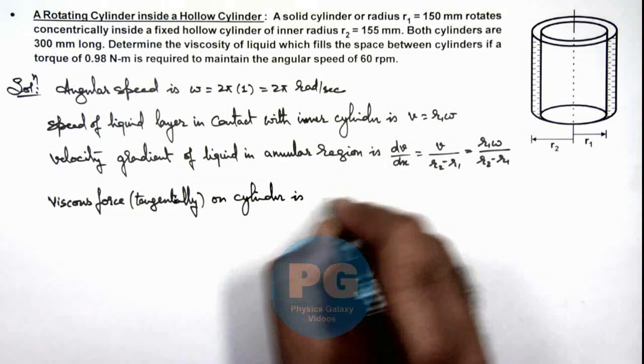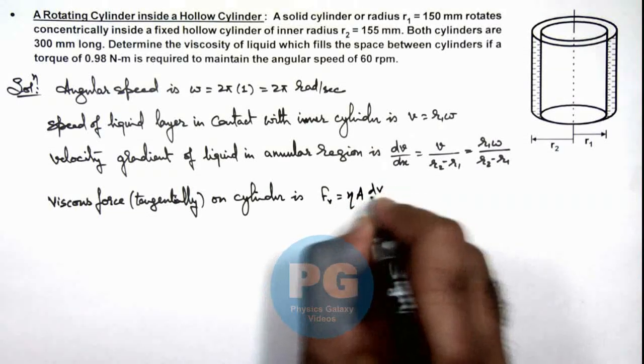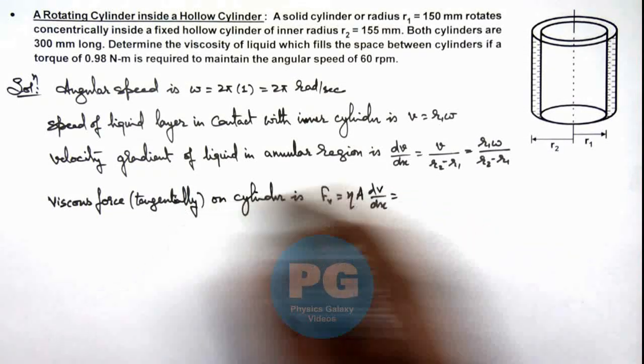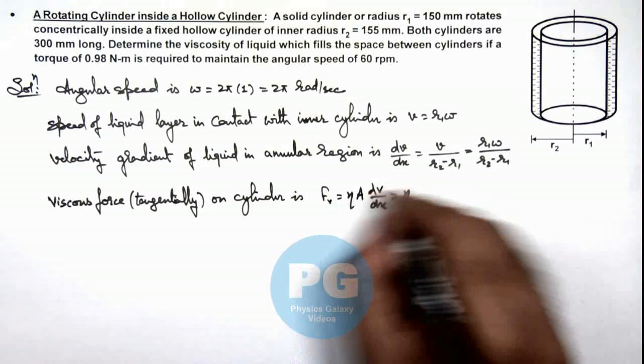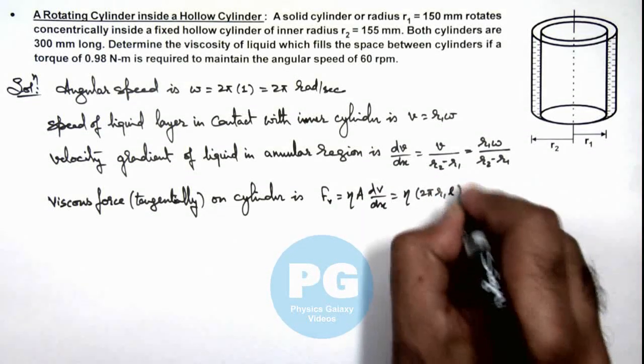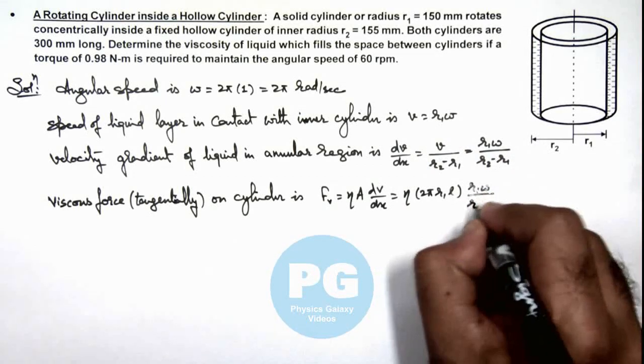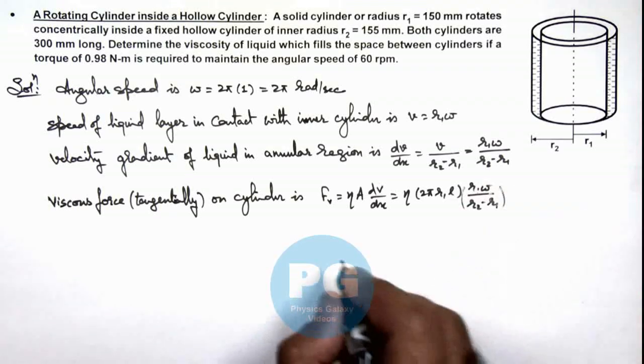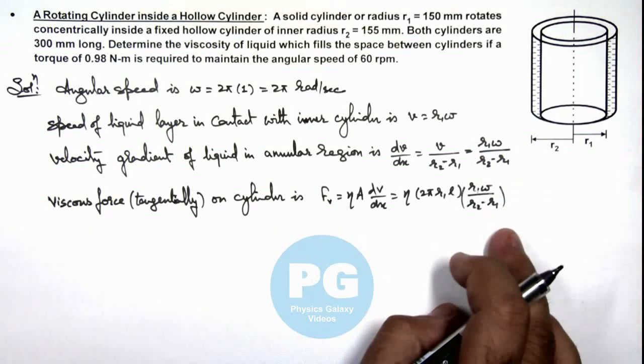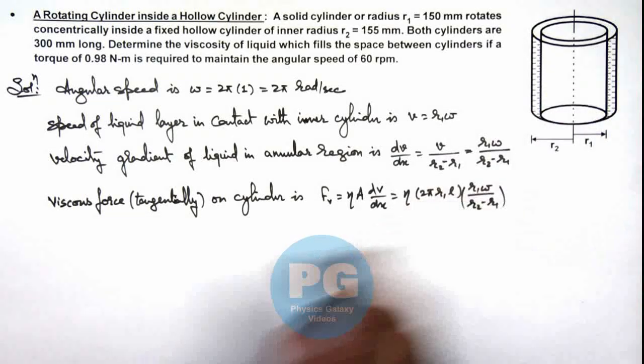This can be given as: the viscous force is η A dv by dx. So we can substitute the values: η, and the area in contact is 2π r1 L, multiplied by r1 omega by r2 minus r1. So as we have got the viscous force, we can calculate the torque by multiplying with the radius.